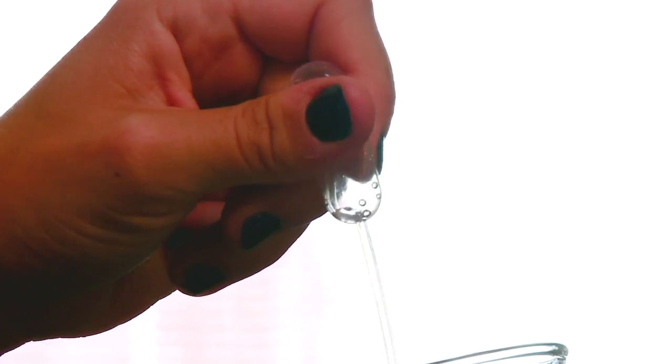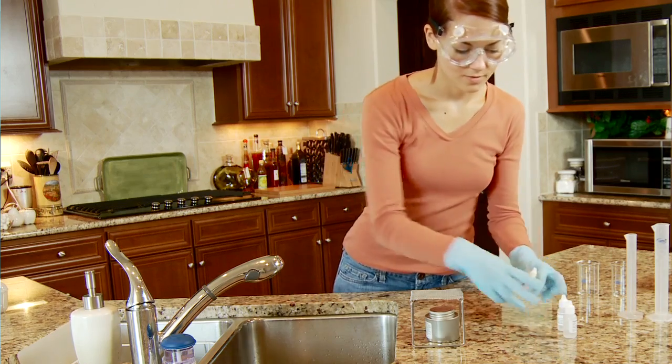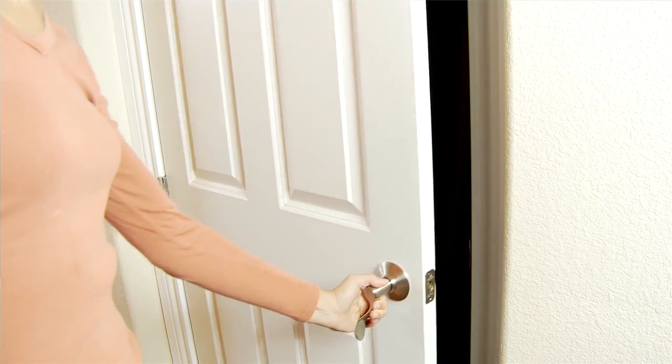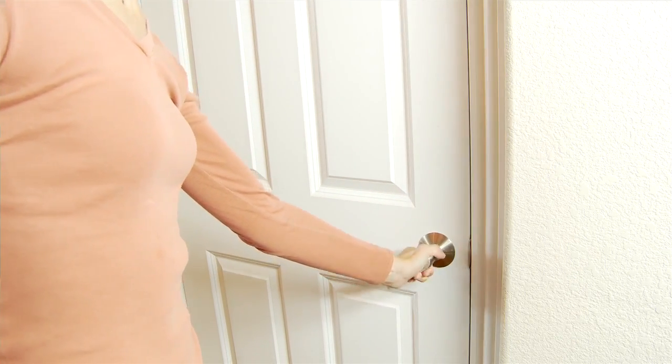Clean pipettes by drawing up and expelling distilled water several times. Then, while squeezing the bulb, forcefully swing them in a downward arc. Double check that all materials have been properly cleaned and put away. Store your lab out of reach of children and pets.